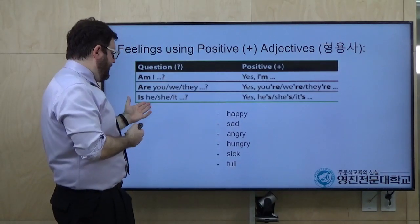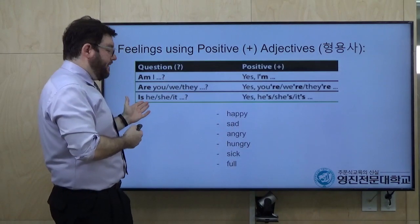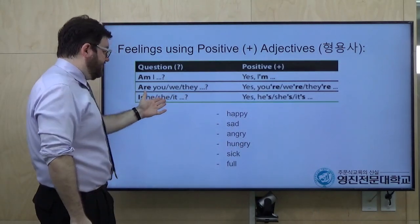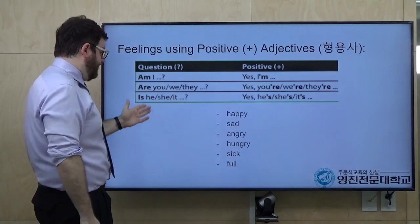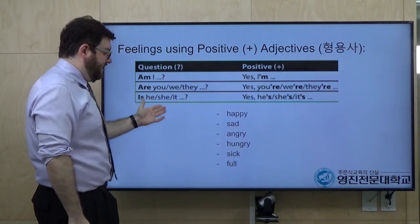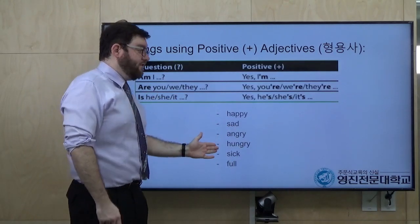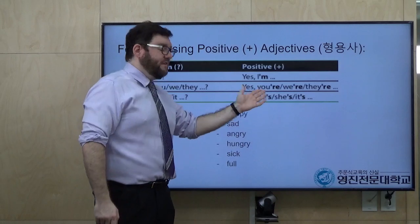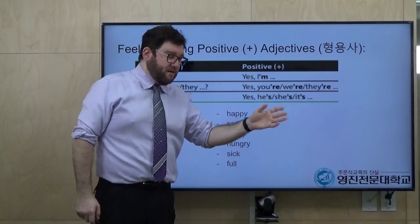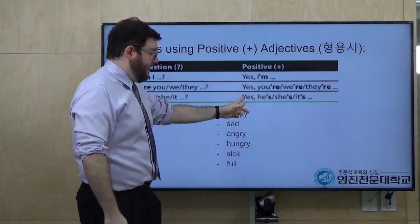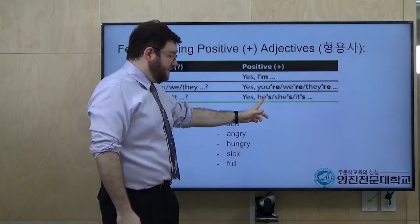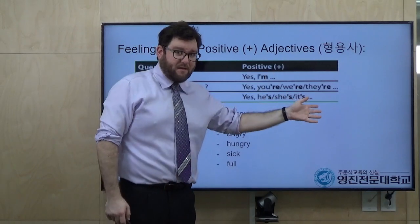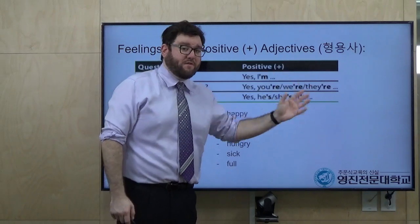Next we have different rules for the pronouns he, she, it. Is he hungry? We can say yes, he's hungry. So it's: yes, the pronoun, B-동사, and then the 형용사. Is she sick? Yes, she's sick.